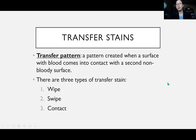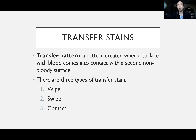Moving on to our next category, we have transfer stains. While impact patterns give us a lot of information regarding the events that occurred, we can also get information from transfer or passive stains. Transfer patterns are patterns created when a surface with blood comes into contact with a second surface that is non-bloody. There are three types of transfer stains: wipe, swipe, and contact.